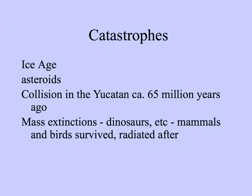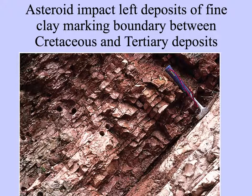It's important to keep in mind the different catastrophes that may have contributed to patterns of species diversity and changes in biogeography. The Ice Age we talked about, but asteroids have hit the planet, causing mass extinctions — in the Yucatan about 65 million years ago there is geological evidence that many species went extinct, including the dinosaurs, but mammals and birds survived and underwent radiation, creating many new species after that. The asteroid left deposits of fine clay that marked the boundary between the Cretaceous and Tertiary deposits.